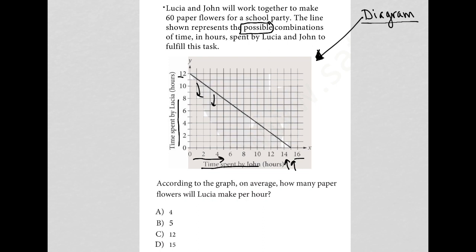I always like to make sure I understand what I read before going to the actual question. So I think, based upon what I read, that if I were to draw a point right here at the top of this graph, that that would mean Lucia worked 12 hours and John worked 0 hours, but they still were able to create these 60 paper flowers.